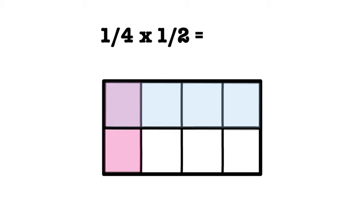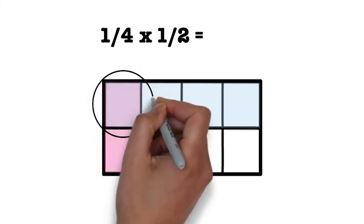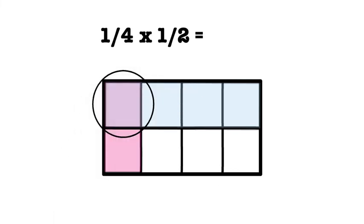Notice the area of the rectangle that is double-shaded or has overlapping shading. This is the answer to our problem. To write out our answer, first we need to consider how many total pieces we divided the rectangle into.